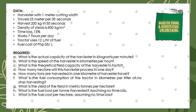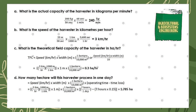The tractor uses 12 liters per hour of fuel and fuel cost of 35 pesos per liter. What is required: the actual capacity of the harvester in kilograms per minute, the speed of the harvester in kilometers per hour, the theoretical field capacity in hectares per hour, how many hectares will this harvester process in one day, how many tons are harvested in one kilometer of travel, the fuel consumption in kilometers per liter of no-stop harvesting, the yield of the field in metric tons per hectare, and the fuel cost per hectare assuming no time loss.